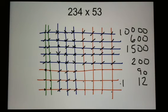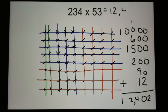So I just have to add everything up, and I get 12,402. So the answer to 234 times 53 is 12,402.